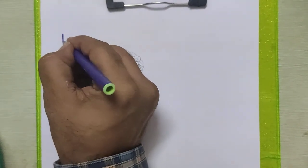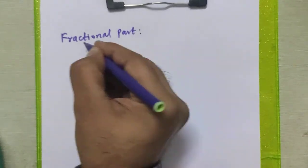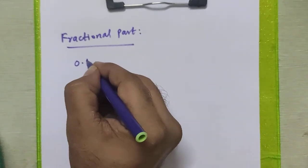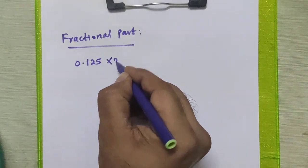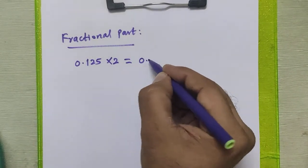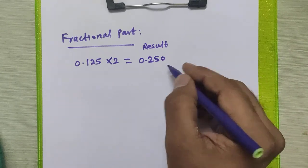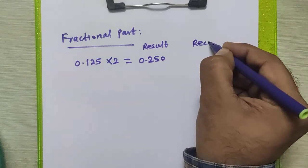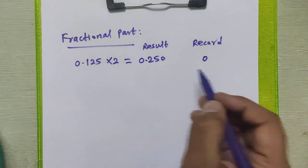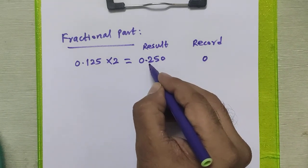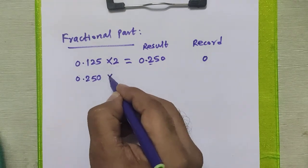Now we will apply a different procedure to convert the fractional part decimal number to binary. The fractional part given in the number was 0.125. For the fractional part, we multiply it by 2 and get the result 0.250. From this result we record the integral part, which was 0.